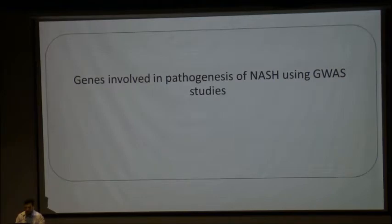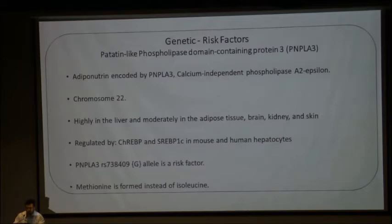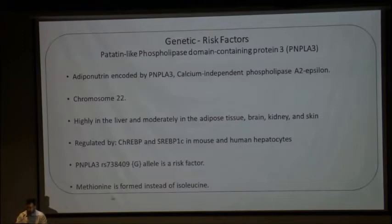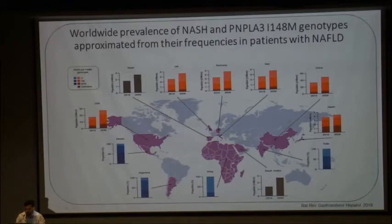Coming to the various genes implicated in the pathogenesis of NASH using GWAS studies. First is PNPLA3, patatin-like phospholipase domain-containing protein 3, also called calcium-independent phospholipase 2 or adipineurin, which has been localized to chromosome 22. It is highly localized to the liver, moderately in adipose tissue, brain, and kidney. It is regulated by carbohydrate regulatory element-binding protein and sterol regulatory element-binding protein 1C. The single nucleotide polymorphism implicated in PNPLA3 is the replacement of isoleucine with methionine at position 148. This slide shows the prevalence of NASH and PNPLA3 genotype in different parts of the world. In India, the I148M pattern is more common, and GG (MM) pattern is less common.